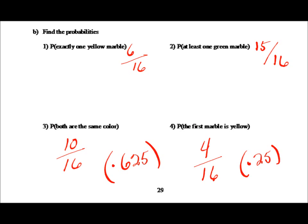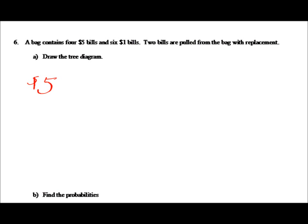Let's take a look at the next example. Here we have a bag containing five dollar bills and one dollar bills — four fives and six ones. Two bills are pulled from the bag with replacement, meaning one is pulled out, put back, and then the second one is pulled out. Let's construct the tree diagram. There are two possible outcomes the first time: we could get a five dollar bill or a one dollar bill.